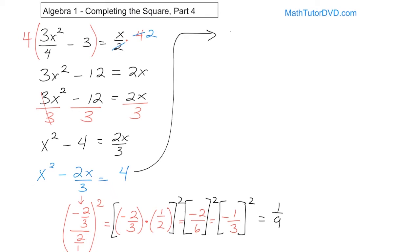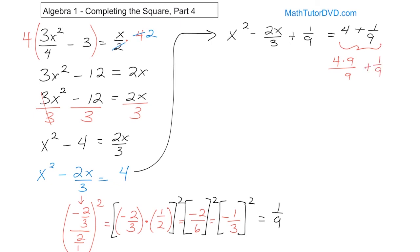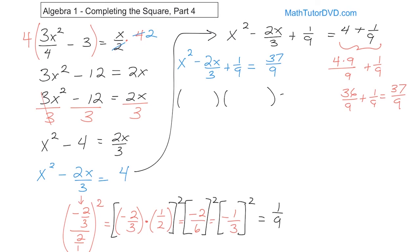So we continue: x squared minus 2x over 3 plus 1 ninth on the left equals 4 plus 1 ninth on the right. It's ugly, but let's add the terms on the right first. Making a common denominator, 4 becomes 36 ninths. Adding 1 ninth gives 37 ninths. So the right-hand side is 37 ninths. Let's rewrite the problem: x squared minus 2x over 3 plus 1 ninth equals 37 ninths.